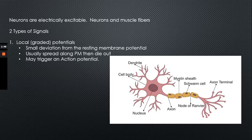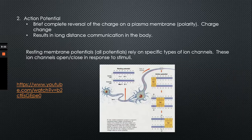However, local potentials can also prompt a neuron to do something — they're not only false starts, they can have an effect. A local or graded potential may trigger an action potential. An action potential is a brief, complete reversal of the charge on the plasma membrane — a reversal in polarity that happens throughout the entire plasma membrane. Action potentials result in long-distance communication in the body.